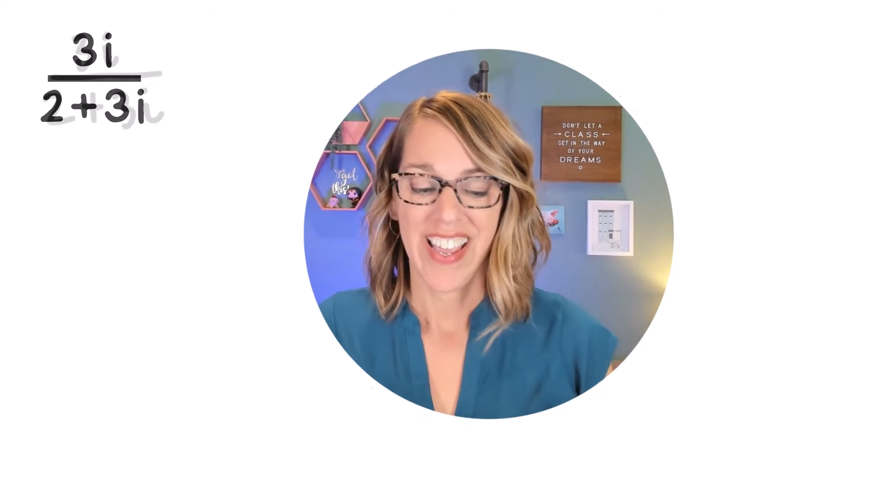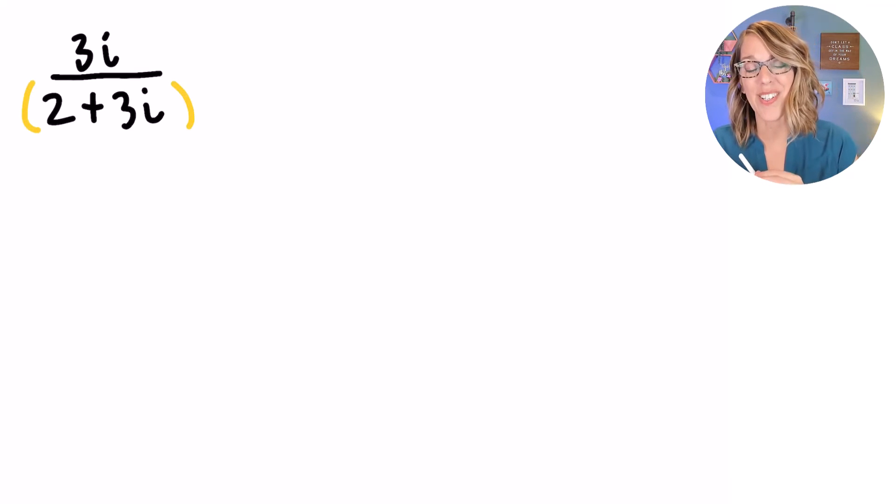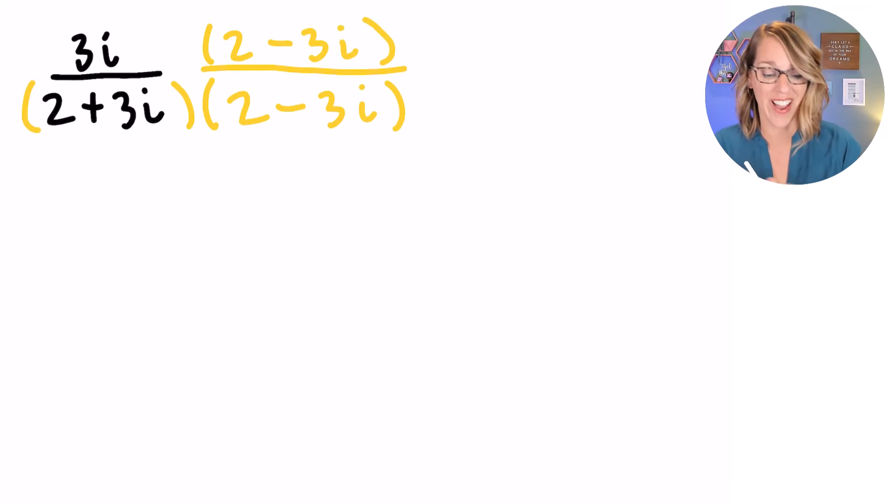Now I'm going to challenge you to pause and work this one through, or you can follow along with me. Now I noticed in my denominator, I've got this 2 plus 3I. I need to multiply by its conjugate. Its conjugate is going to change the sign in the middle, so 2 minus 3I. And whatever I do to the denominator, I need to do to the numerator as well, 2 minus 3I.